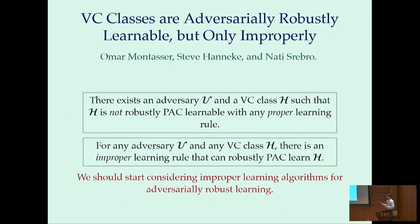So in summary, in this work we show that there are VC classes that can't be robustly PAC learned if we restrict ourselves to proper learning rules. And then in the second result we show that for any VC class and any adversary U, we can robustly PAC learn it with an improper learning rule. And the takeaway message is that we should start considering improper learning rules for adversarially robust generalization. Thank you all for sticking around.